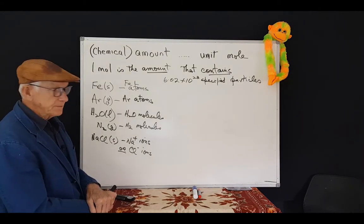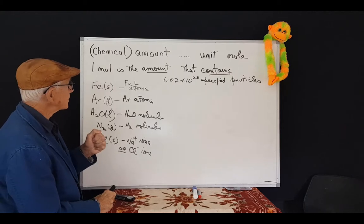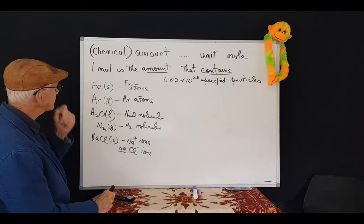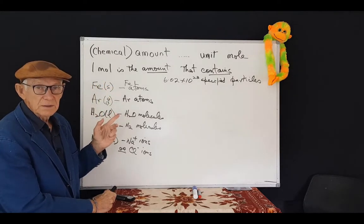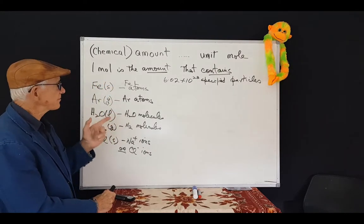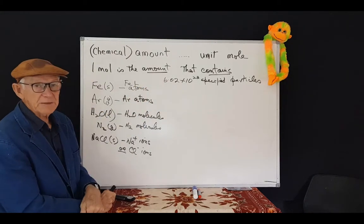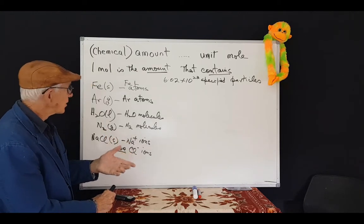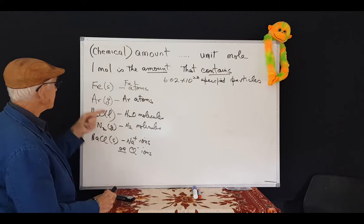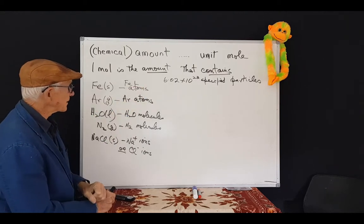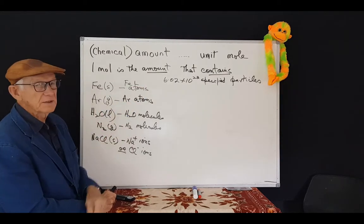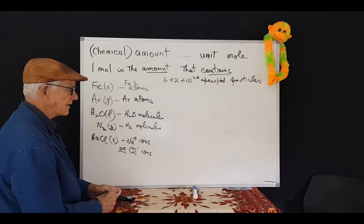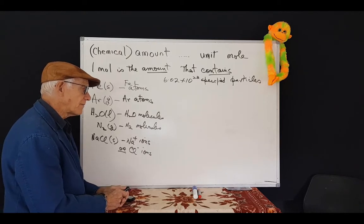Now we come to the really useful and important part of this story. One mole of every substance, the amount of it that contains exactly that many particles of which it's composed, has a particular mass. One mole of this weighs a certain amount. The amount that contains that many particles has a certain mass. It's called, obviously, the molar mass.